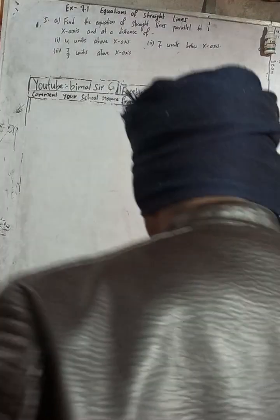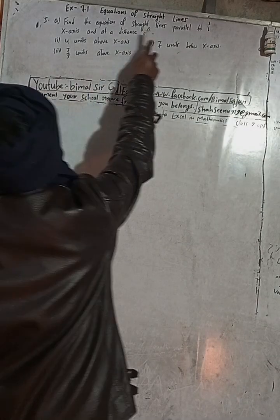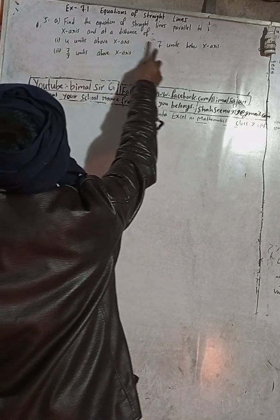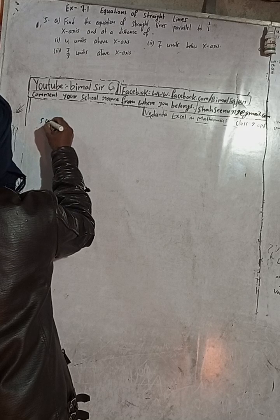Hi class 9 and 10 students, welcome back to Vimal Sharjee's YouTube channel. This is question number 5a, exercise 7.1, equations of straight lines from Vedant Excel in optional mathematics class 9. The question asks us to find the equation of a straight line parallel to the x-axis at a given distance.